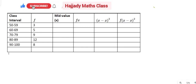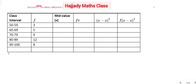Today we shall be working on episode 7 of our statistics for beginners. Today we are asked to calculate the mean, variance, and standard deviation for grouped data. The first thing we need to do is get a middle value.